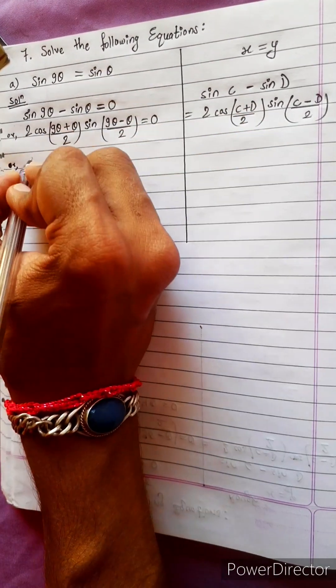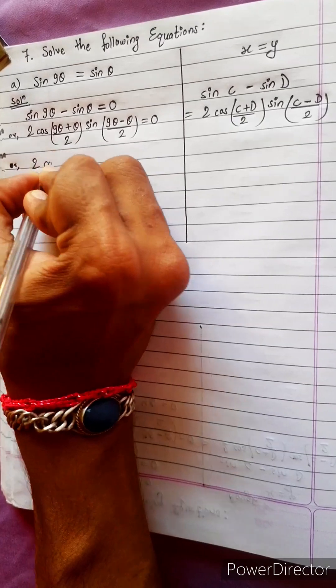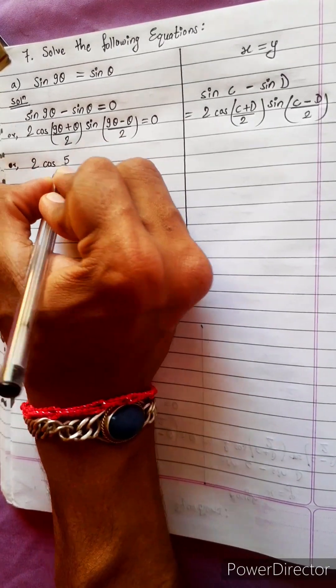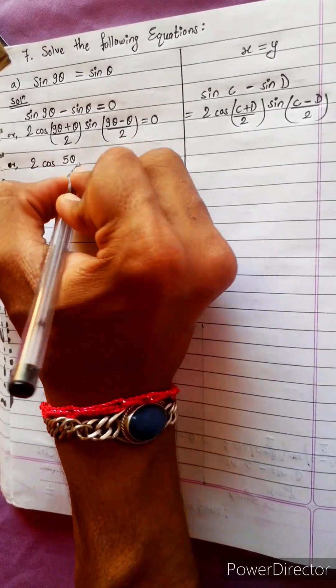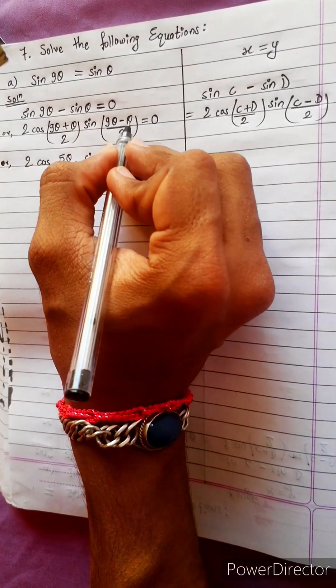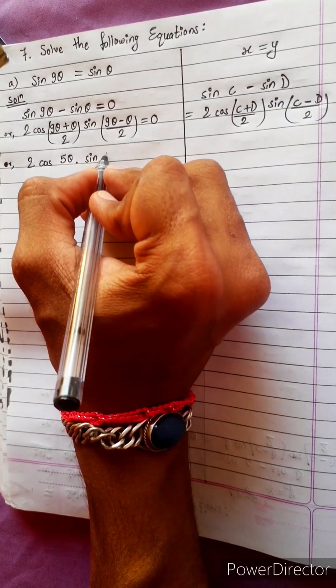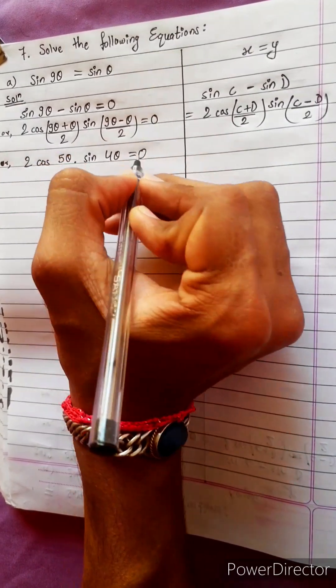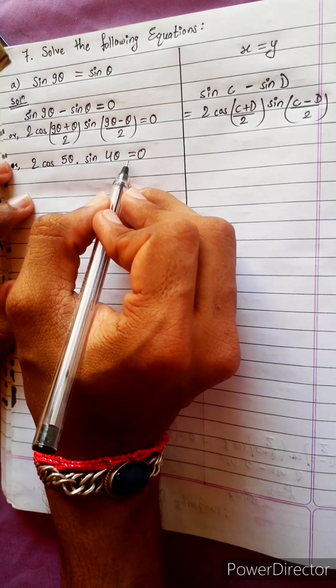9 plus 1 is 10, divided by 2 gives 5θ. 9 minus 1 is 8, divided by 2 gives 4θ. So the expression becomes 2 cos 5θ into sin 4θ equals 0.